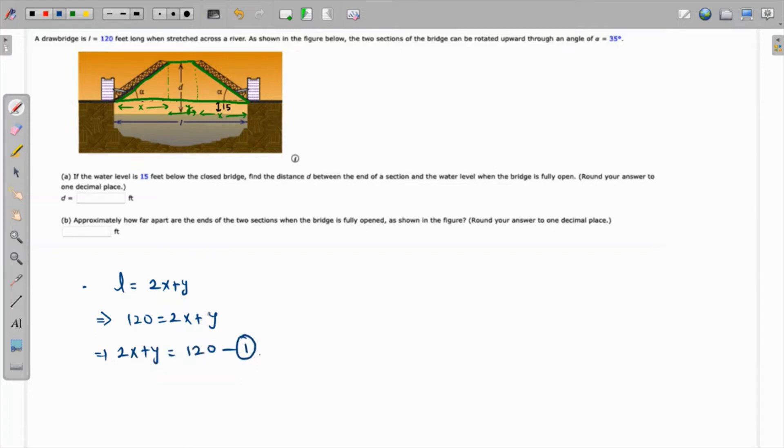If we talk about this particular triangle, this distance, the blue one, is nothing but the complete distance d minus 15, because this is 15 and this complete is d. So if I'm going to draw that triangle separately, this is d minus 15, then the length is x, and this angle is alpha, which is given as 35 degrees.